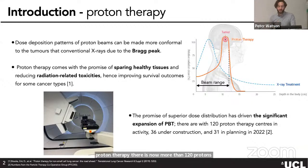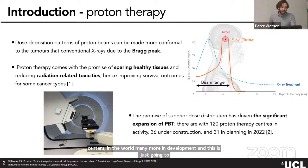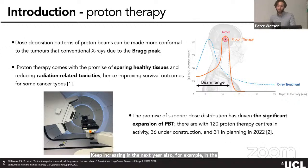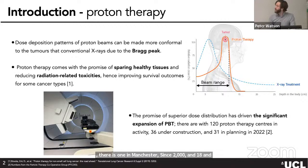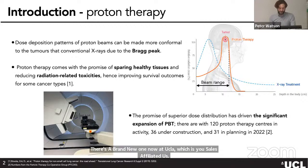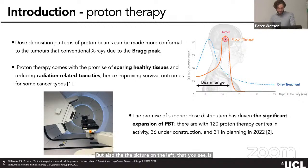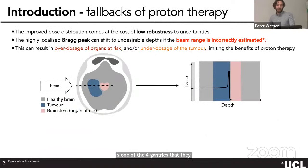This promise of superior dose distribution has driven the development of proton therapy. There are now more than 120 proton centers in the world. In the UK, there are two proton therapy centers — one in Manchester since around 2018, and a brand new one at UCLH, UCL's affiliated hospital, which has four gantries.